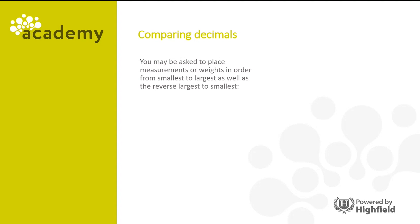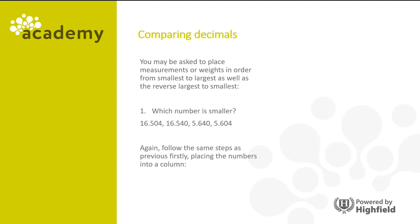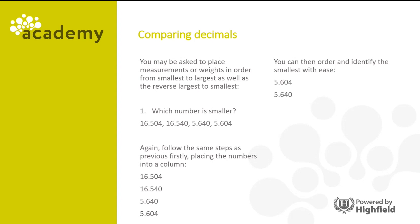You may be asked to place measurements or weights in order from smallest to largest as well as the reverse, largest to smallest. Which number is smaller: 16.504, 16.540, 5.640 and 5.604? Again follow the same steps, firstly placing the numbers into a column. You can then order and identify the smallest with ease: 5.604, 5.640, 16.504 and 16.540. The smallest decimal is 5.604.